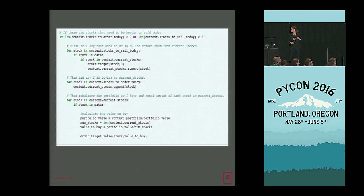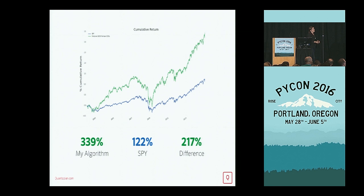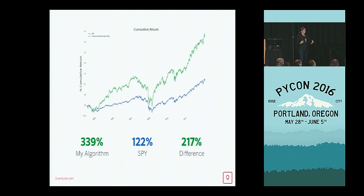When I run this version of my strategy, my algorithm investing in female CEOs of the Fortune 1000 returns 339% for an outperformance of 217% over the S&P 500. Being a novice quant, I'm still pretty happy with these returns. I would take 200% returns in the market. But I also know I don't know what I don't know.